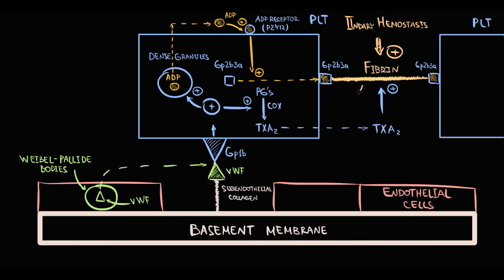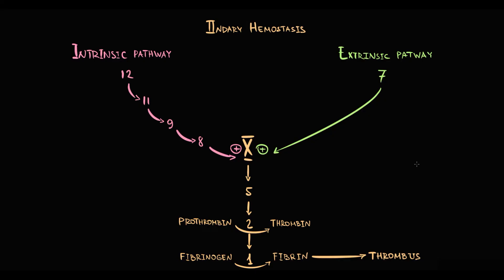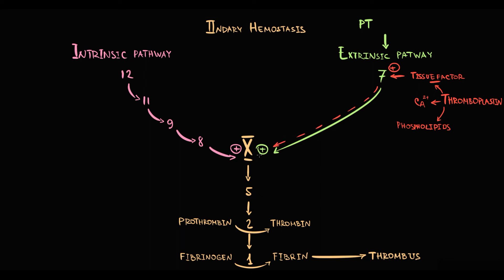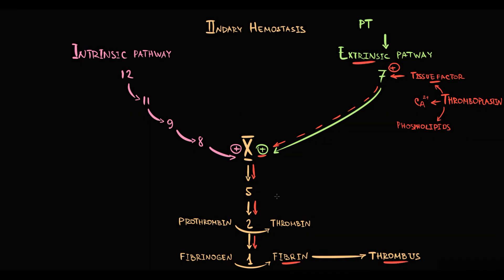So secondary hemostasis converts the platelet plug into a thrombus. For assessment of secondary hemostasis, we use three methods. Prothrombin time is used to measure the function of the extrinsic pathway. In this test, we add to patient blood a thromboplastin, which is a mixture of tissue factor, calcium, and phospholipids. The major component is tissue factor, because tissue factor activates factor 7 and thereby induces the extrinsic coagulation pathway that activates factor 10 and eventually results in production of fibrin. So prothrombin time measures the extrinsic and common coagulation pathway.